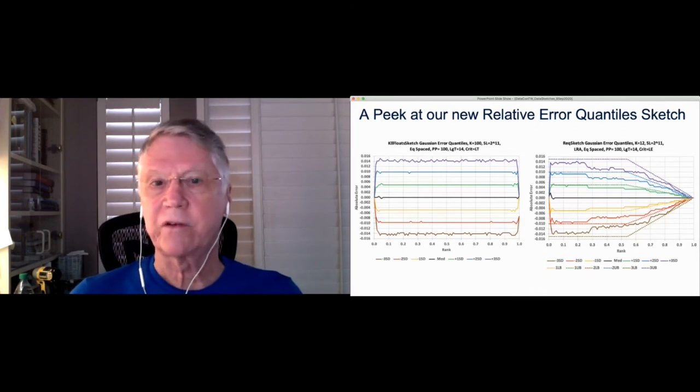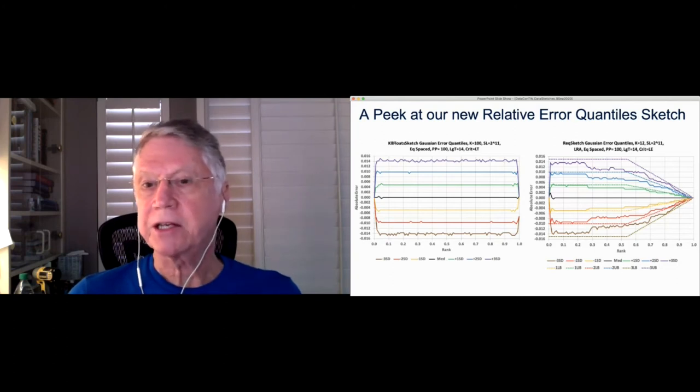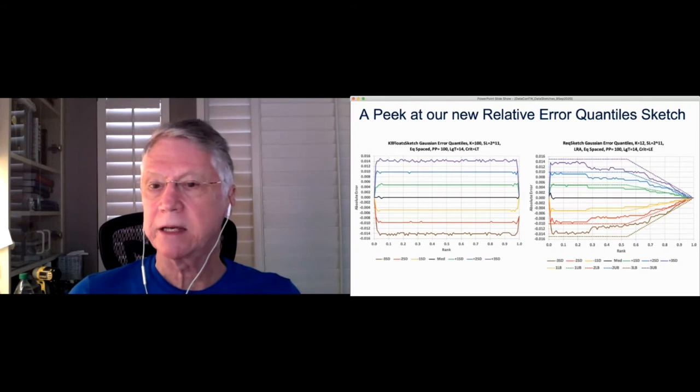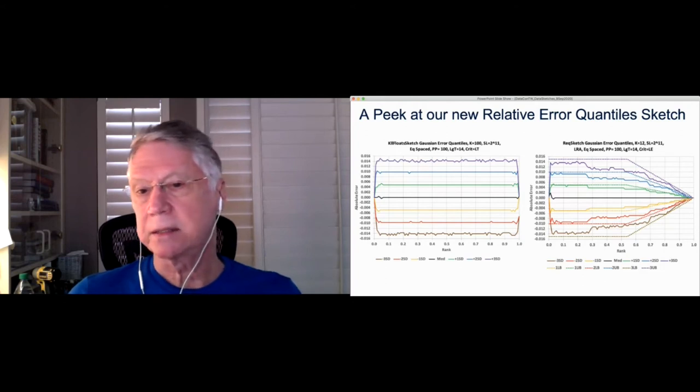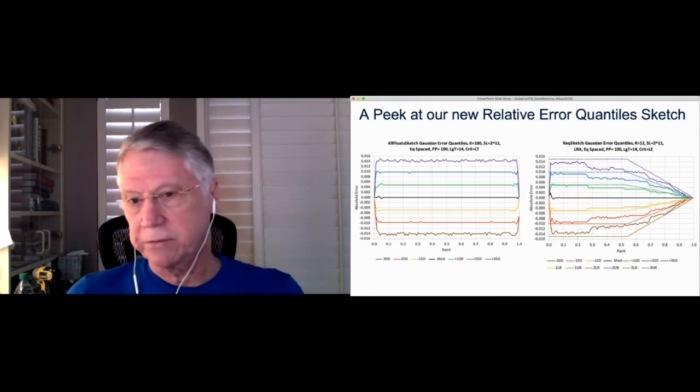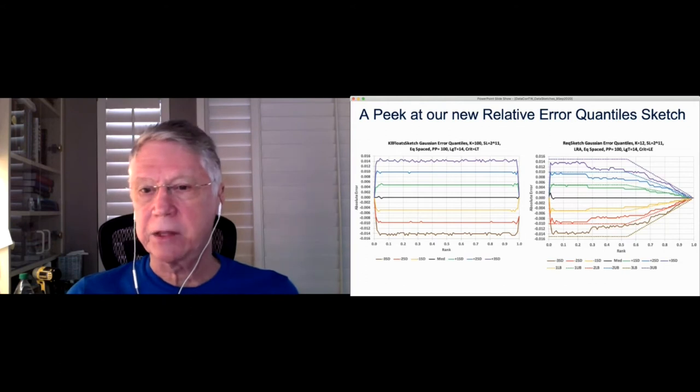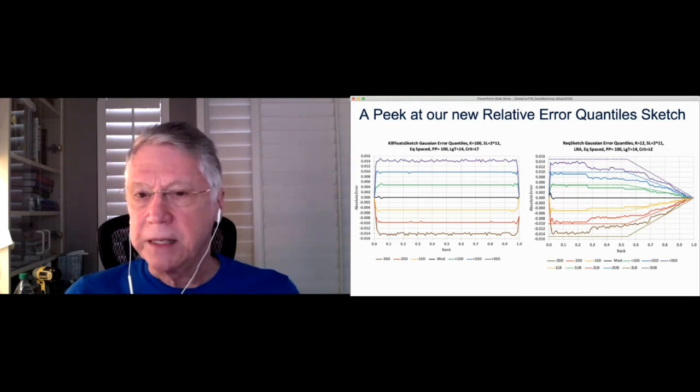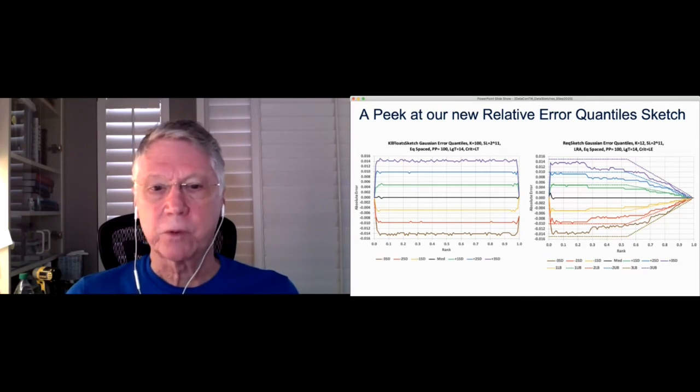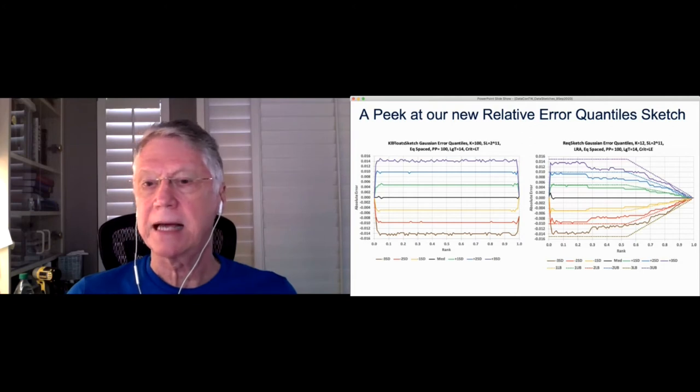So you can configure the sketch so at the high end you get extremely high accuracy all the way down to exact. So that, for instance, you ask for the 90th percentile, and you can see it's four tenths of a percent. At the 99.9 percent, it's extremely accurate.